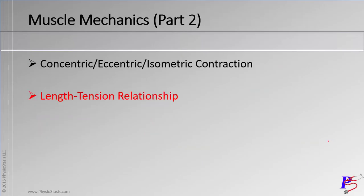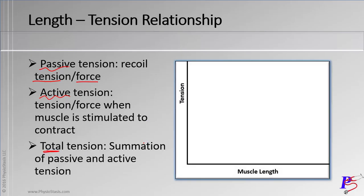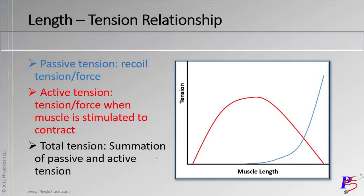Now let's move on to the bulk of this video and the length-tension relationship. We have two types of tensions here, or forces — tension can be interchanged with the word force. We have a passive and an active tension, and when we summate or add them together, we have the total tension. We'll be looking at this graph: on the bottom, we have the length of the muscle increasing to the right; on the y-axis, the tension increases going up. In blue is our passive tension line, in red our active tension line, and in purple our total tension line.